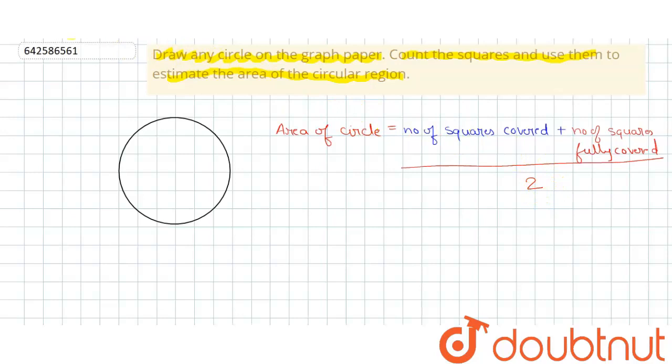What do we mean by number of squares covered? It's the total number of squares covered. This square will always be counted in number of squares covered, and this square will also be counted. But in case of number of squares fully covered, we'll count only those squares which are fully covered. Like this square will be fully covered, but this square is not fully covered. So let us find the number of squares covered here first.